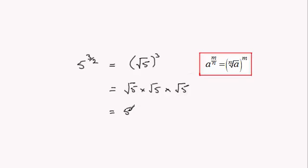So you end up with 5 times root 5, which is just 5 root 5. That's in the form a root 5, where a is an integer and a equals 5.